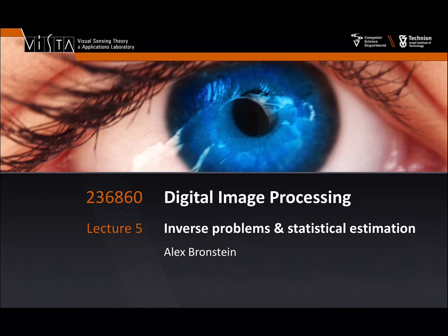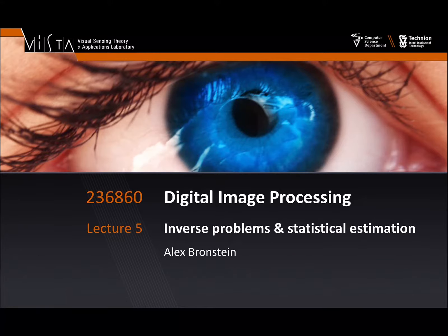In maximum a posteriori estimators, we'll see that we have two terms. One will be a data-fitting term telling us how well our estimated signal fits the measurements. Another term will be a prior — from the probabilistic perspective, it will tell us the prior probability of our signal. Without exaggeration, we can say that probably close to 80% or 90% of the literature in image processing in the past 20 or 30 years concentrated on devising better priors for natural images. Once we accept this framework, I will show you a sequence of priors that can be plugged into it.